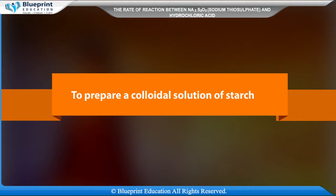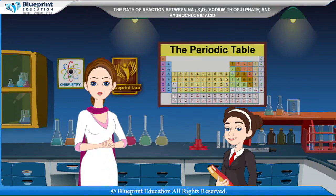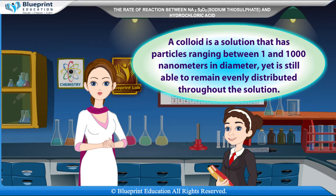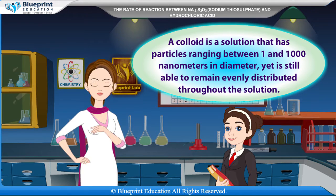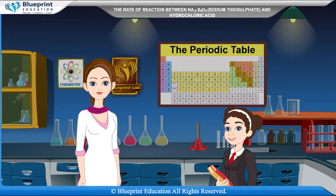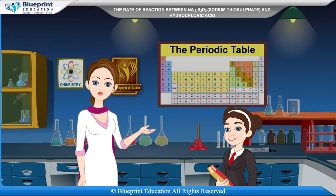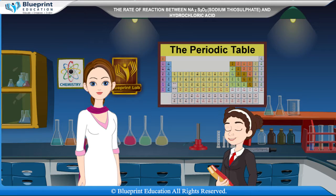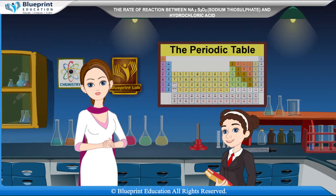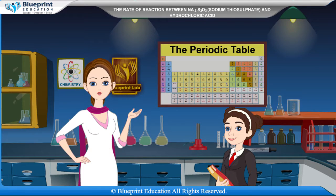To prepare a colloidal solution of starch: a colloid is a solution that has particles ranging between 1 and 1000 nanometers in diameter, yet is still able to remain evenly distributed throughout the solution. These are also known as colloidal dispersions because the substances remain dispersed and do not settle to the bottom of the container.